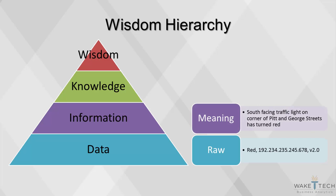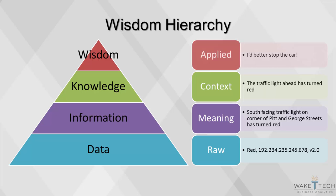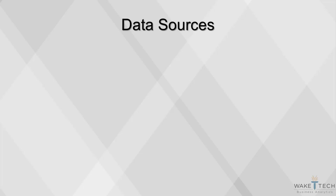Information provides meaning from data, often combining multiple data points to produce a tangible idea. Knowledge provides context from the information, making it directly applicable to a situation. Wisdom applies the knowledge to make a decision. The original data has become useful, enabling an action to be taken.